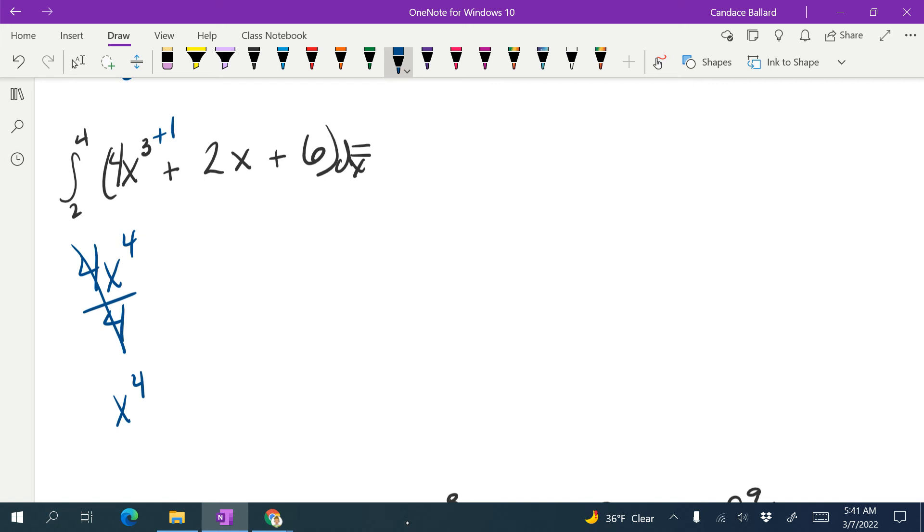We have an exponent of 1, so we're going to add 1 to it, so plus 2x squared over 2. These cancel, we get x squared.